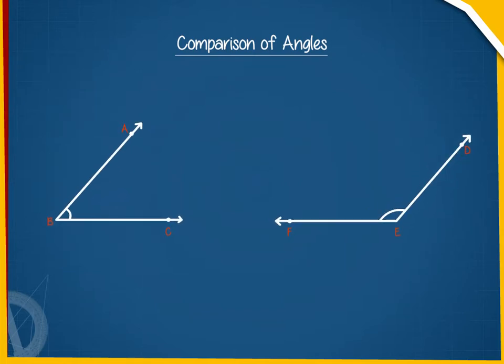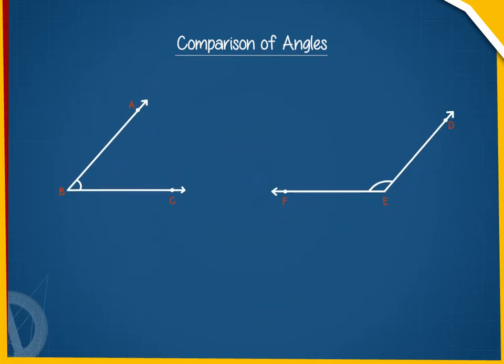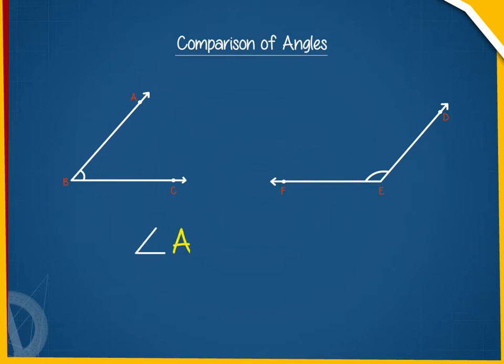Let us see these two angles. Clearly, angle ABC is less than angle DEF. By using a protractor also, we can compare the magnitudes of two different angles.